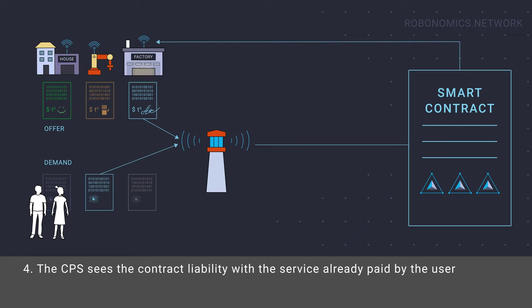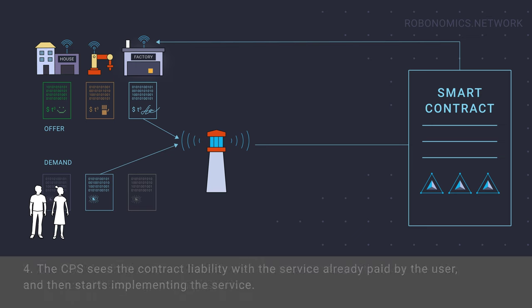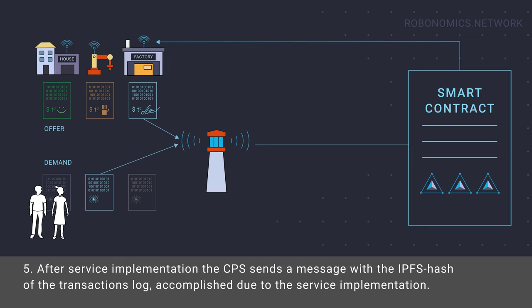The cyber-physical system sees the contract liability with the service already paid by the user and then starts implementing the service. After service implementation, the cyber-physical system sends a message with the IPFS hash of the transaction log accomplished during the service implementation.